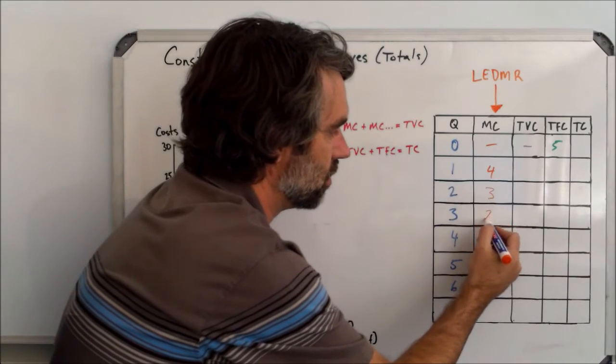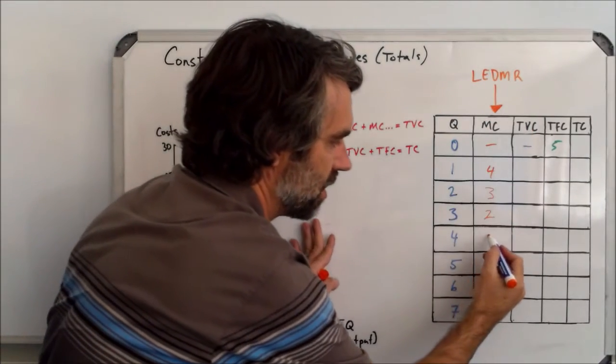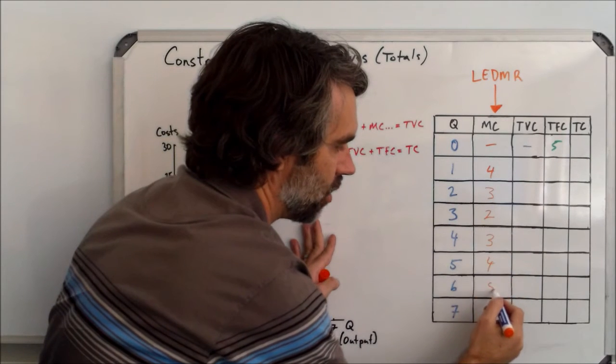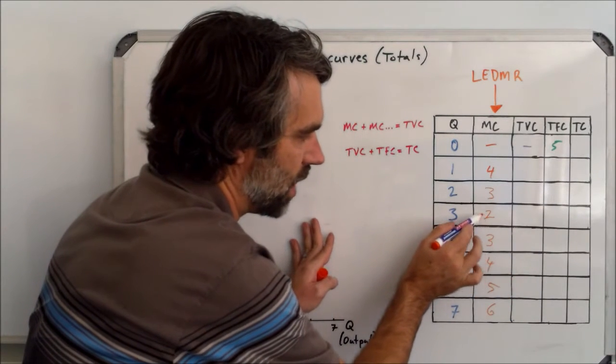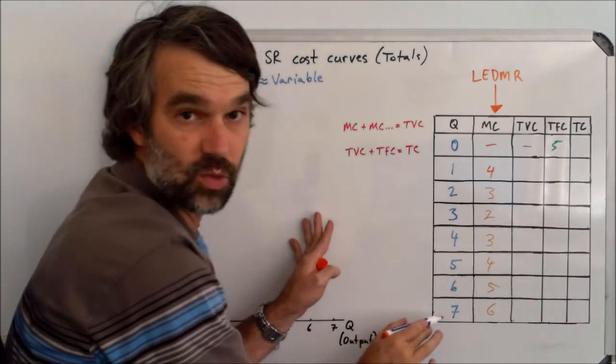But eventually, because of diminishing marginal returns, these costs are going to increase. So we see from this point, now the costs are going up and up and up as we continue to produce one more.